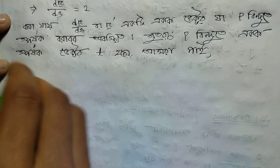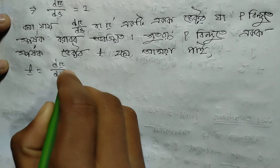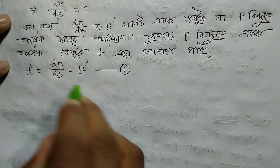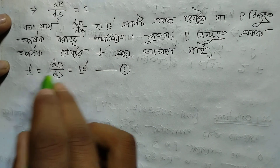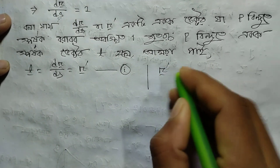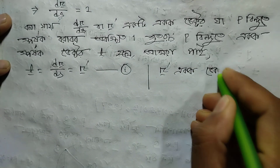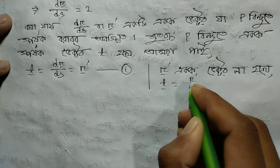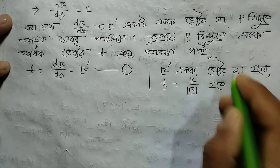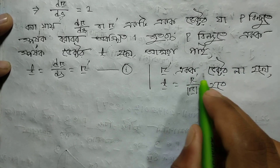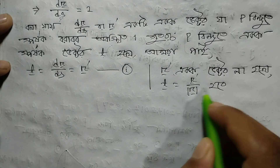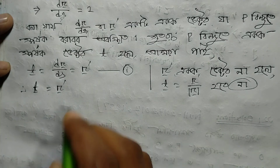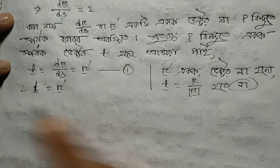Here we can write: we get t vector — r prime vector — that is r prime equals t. So we will be talking about a vector equals to r prime. That is established.